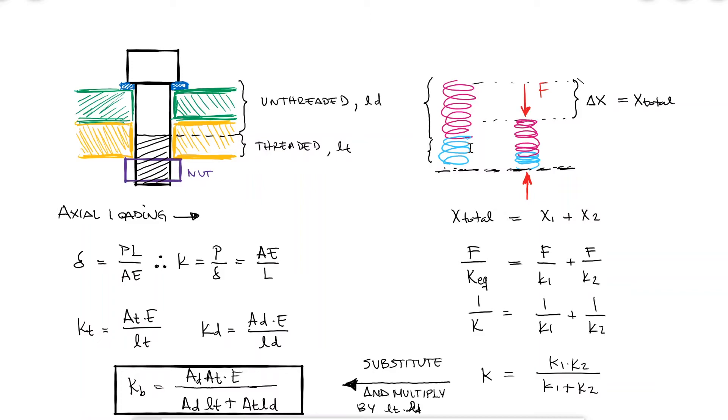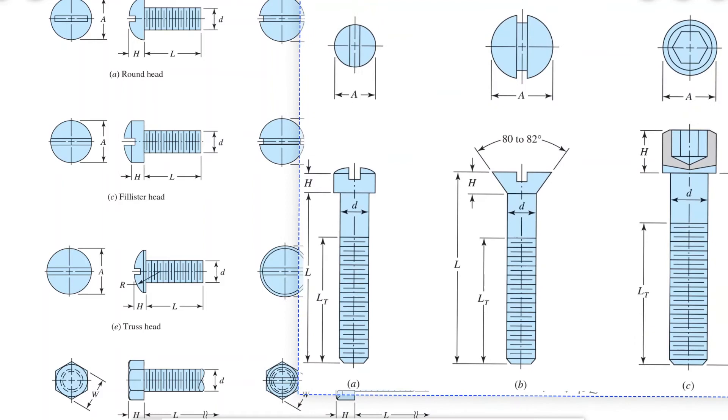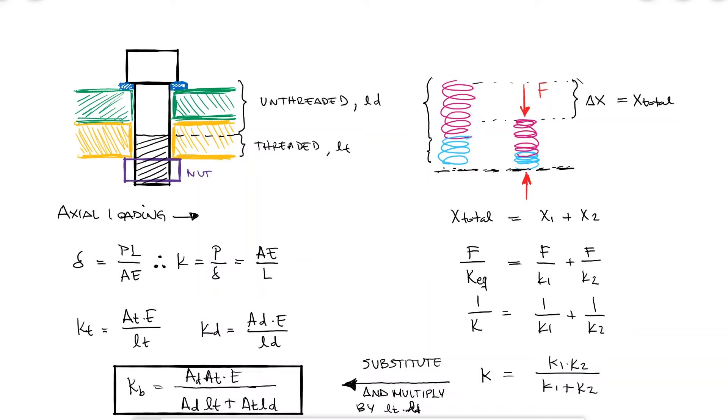Now, there are many standards for bolts, cap screws, and machine screws. Several tables and equations in your textbook will show dimensions for threaded and unthreaded portions, or rules and expressions to find out thread lengths, major, mean and root diameters, and everything else you need to estimate the bolt stiffness like AT.